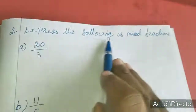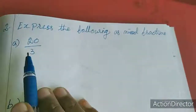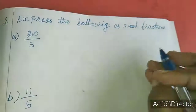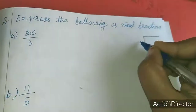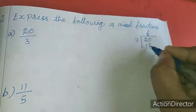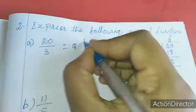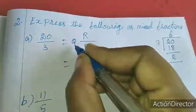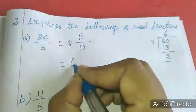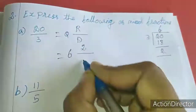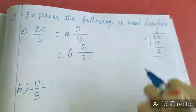Second sum: express the following as mixed fractions. This is a mixture of fractions — convert. To convert, divide: 3 goes into the number, 2 is inside. Quotient, remainder divided by divisor. Quotient is 6, remainder is 2, so the answer is 2 by 3. This is the mixed fraction.